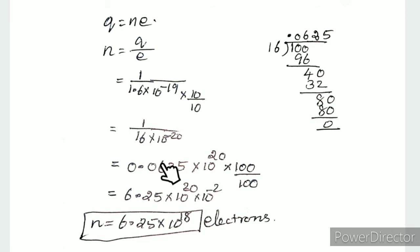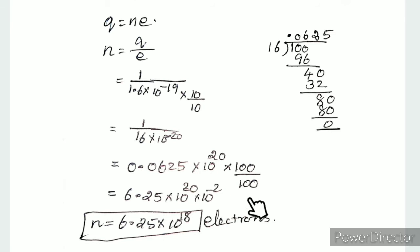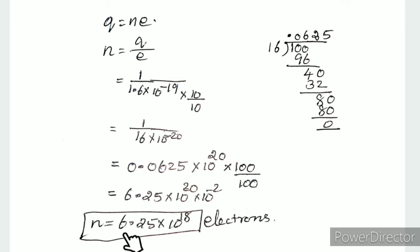Solving: n = 1 / (1.6 × 10⁻¹⁹) = 0.625 × 10¹⁹ = 6.25 × 10¹⁸. Therefore, the number of electrons in one coulomb of charge is 6.25 × 10¹⁸ electrons.